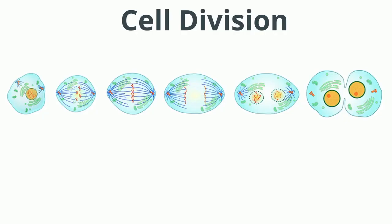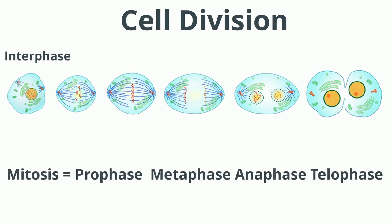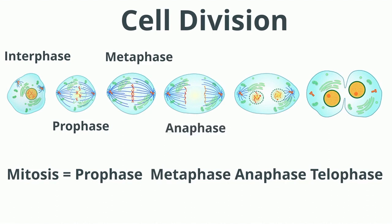The cell divides during cell division, which includes mitosis. Cell division begins during interphase, when the cell makes copies of organelles and DNA. Mitosis begins with prophase, when chromosomes first appear. During metaphase, the nuclear membrane dissolves and the chromosomes line up in the middle of the cell. During anaphase, the sister chromatids separate and move away from one another. During telophase, the nuclear membrane forms around the chromosomes and the chromosomes unwind. This is the end of mitosis. During cytokinesis, two cells are created.